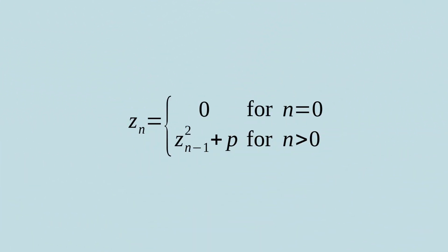Let's take a look at a sequence of complex numbers defined with the recurrence equation. Zn equals 0 for n equal to 0, and Zn equals Zn minus 1 squared plus p for n greater than 0, where p is a parameter.